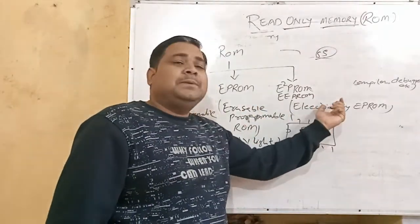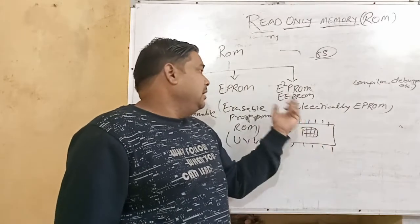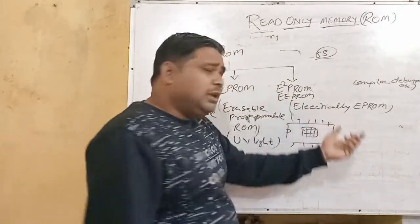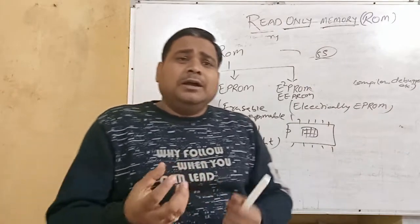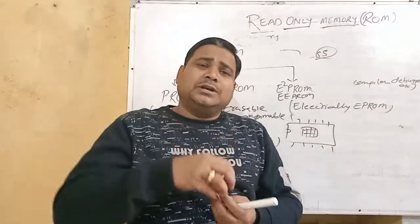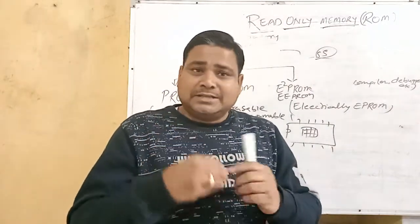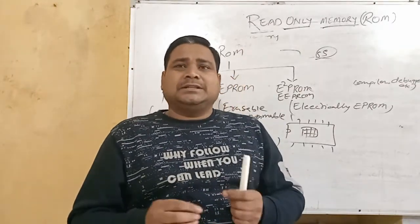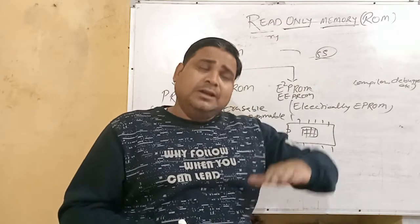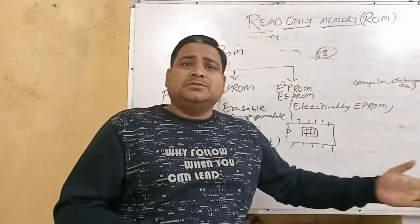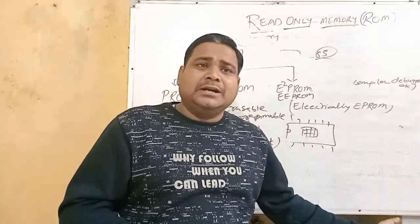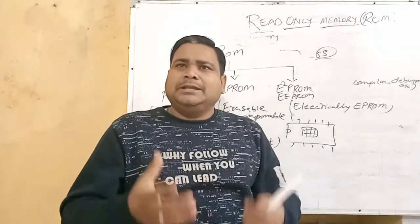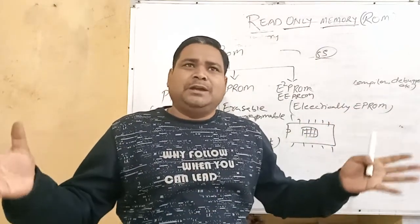After EPROM, we have EEPROM — Electrically Erasable Programmable Read-Only Memory. What is stored in the ROM can be erased electrically rather than with ultraviolet rays. By passing an electrical current, the data is erased, and then new data can be stored. This is a much easier method compared to EPROM.